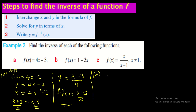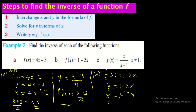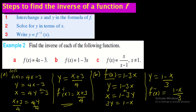For part (b): f(x) = 1 - 3x. As before, f(x) is the same as y = 1 - 3x. In place of y write x and in place of x write y: x = 1 - 3y. Bring 3y to the left: 3y = 1 - x. Divide both sides by 3: y = (1 - x)/3. This is the inverse: f⁻¹(x) = (1 - x)/3.